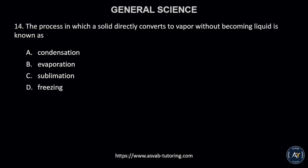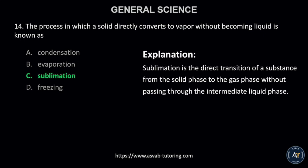Number 14. The process in which a solid directly converts to vapor without becoming liquid is known as? A. condensation, B. evaporation, C. sublimation, or D. freezing? The correct answer is letter C, sublimation. Sublimation is the direct transition of a substance from the solid phase to the gas phase without passing through the intermediate liquid phase.